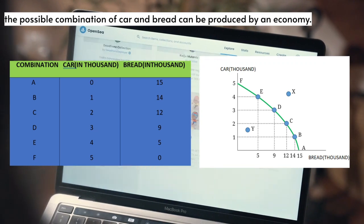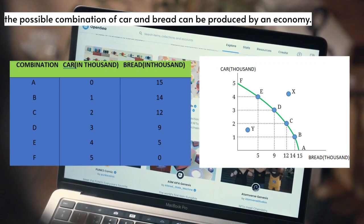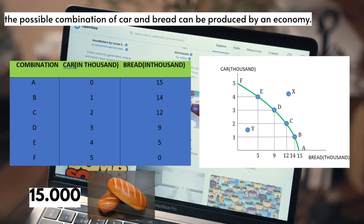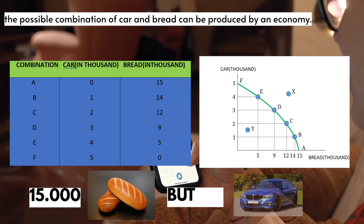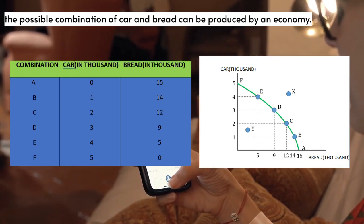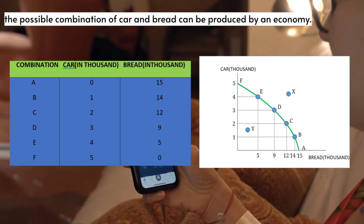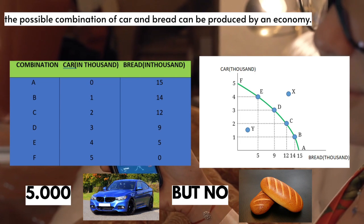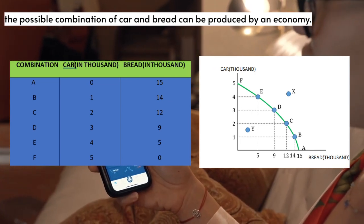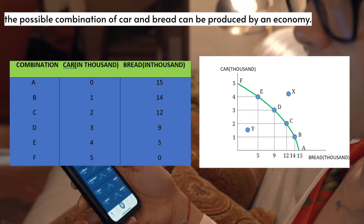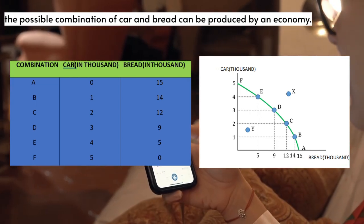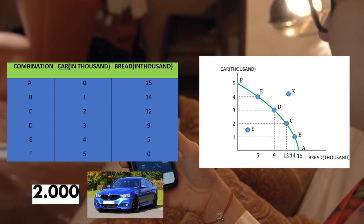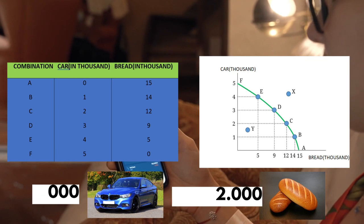In this economy, if all the resources were used for the bread industry, the economy would produce 15,000 loaves of bread but no cars. On the contrary, if all resources were used for the car industry, the economy would produce 50,000 cars but no bread. Another alternative is that if the economy divides its resources between car production and bread, then the economy can produce 2,000 cars and 12,000 pieces of bread, indicated by point C.